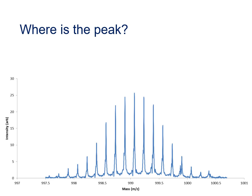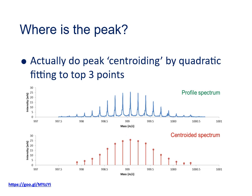In any mass spectrum, one of the key things we're interested in is where the peaks actually are and how high they are. So how do we actually find the mass and intensity of a peak? The process of finding peaks in a mass spectrum is sometimes called peak detection, peak picking or centroiding. And the mathematics of actually finding the peak position and height for every peak is covered in a presentation linked from this button here.